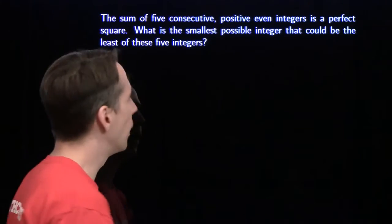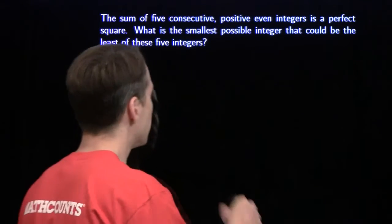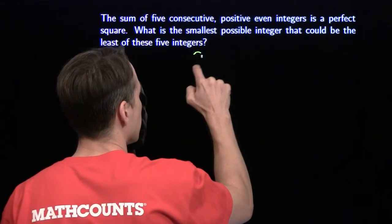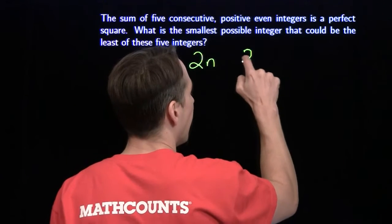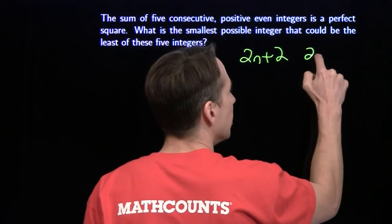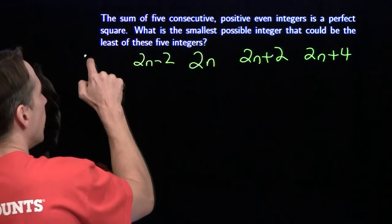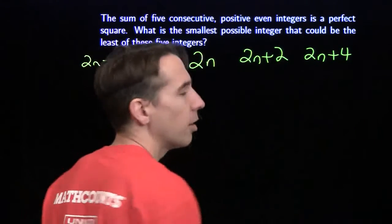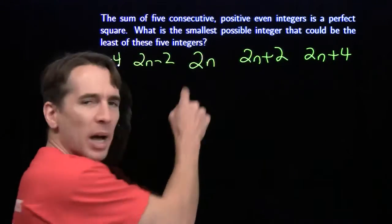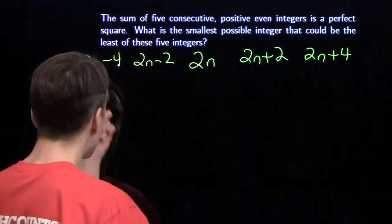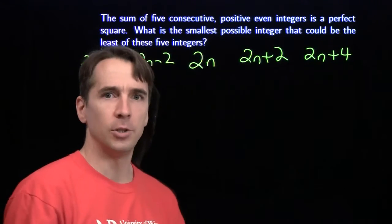We're going to think about the middle number. We don't know what the numbers are initially, so we'll use a variable, but we need to make sure it's even — so we can't just use n, we'll use 2n. Starting from the middle, there are five numbers; we go up by two each time and down by two each time. When we add them all up to find the sum, the minus 2 and plus 2 cancel, the minus 4 and plus 4 cancel, and we're left with five copies of 2n.